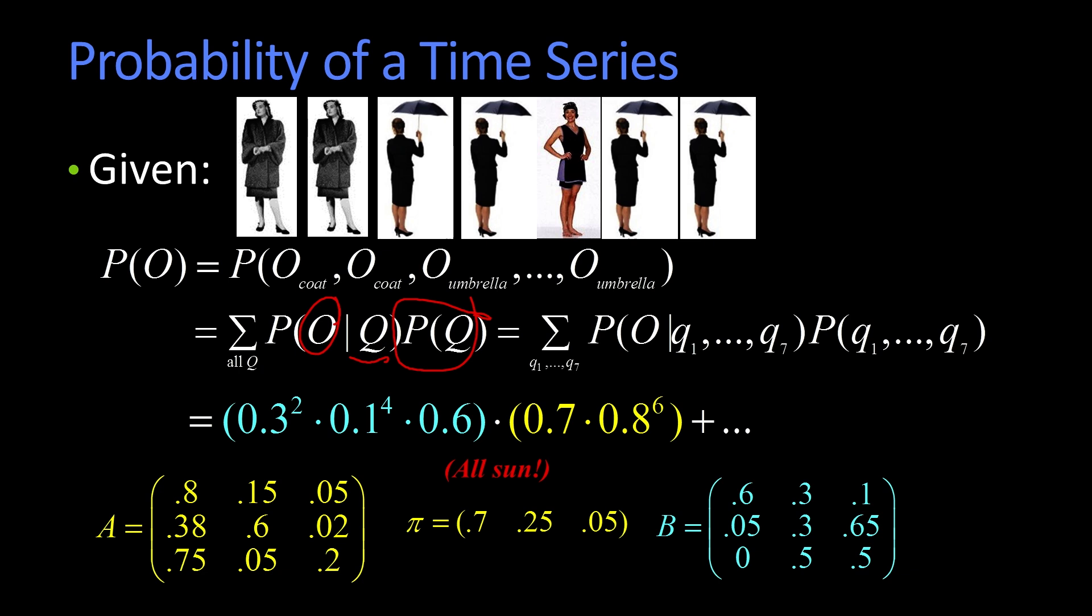So one simple example is, one possible sequence of states, just one, is that it's all sun. And that can be determined from the yellow stuff here. So it's the probability that I start with sun, 0.7, right there. And then I follow that with a whole bunch of sun, 0.8, 0.5, all sunny days. So this is the probability of all sunny days. And this would be the probability of seeing this sequence if every day was sunny.